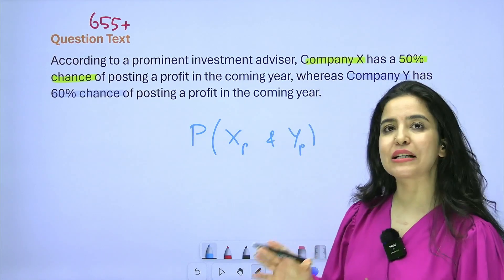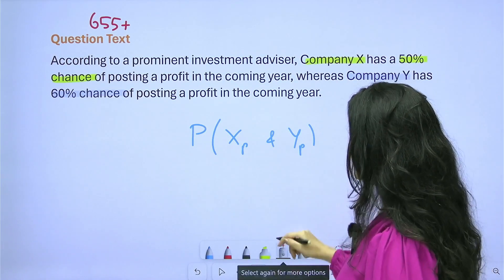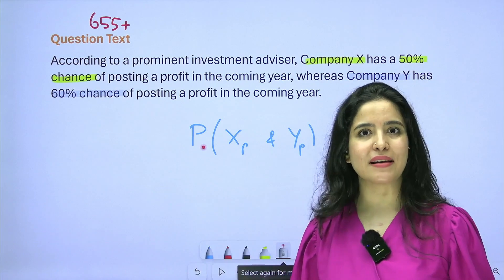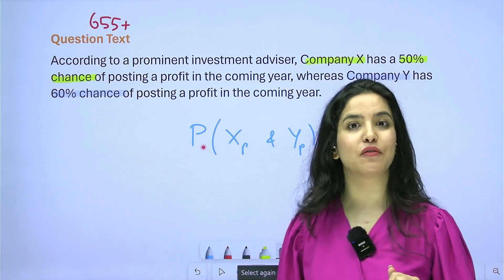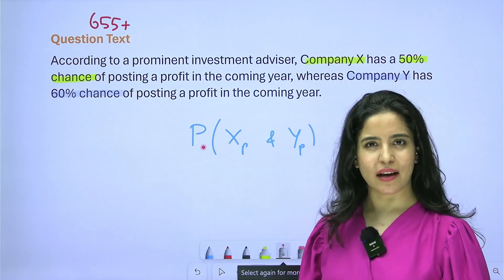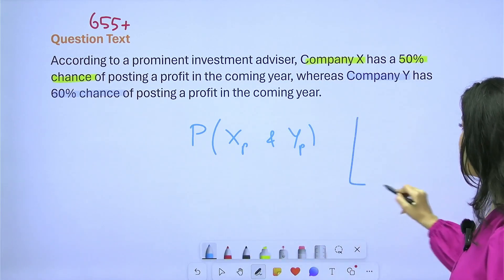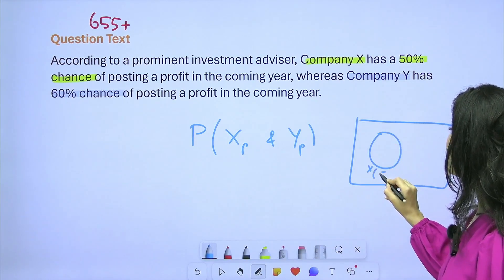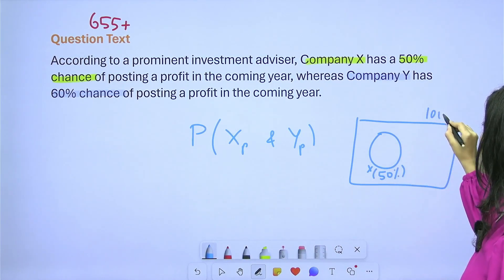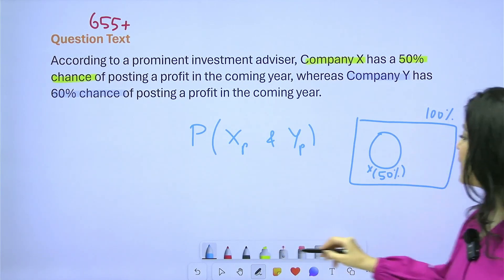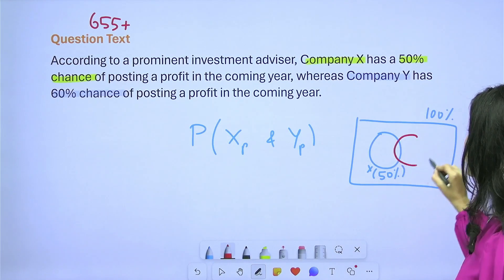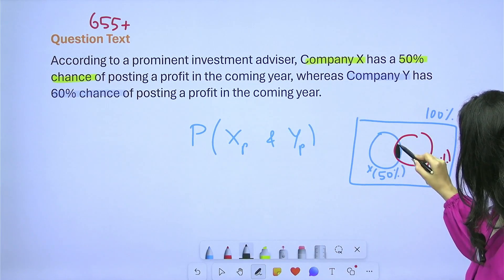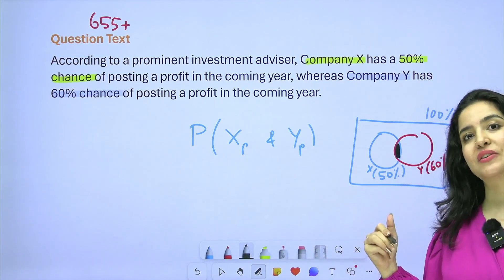To find this intersection probability, the best approach is to draw a Venn diagram. I have Company X with a 50% chance — that's the size of its circle — inside a universal set of 100%. Company Y has a 60% circle. The overlapping section represents the probability that both post a profit. I want to find the least and greatest possible size of that overlap.